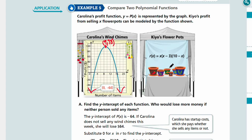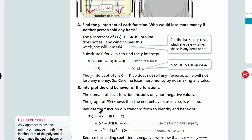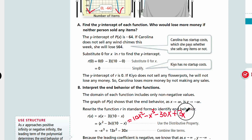Looking at Kia's flower pots, we need to look at the equation and convert it to standard form. So r of x — we multiply x out and distribute it with the binomial x minus 3, then multiply the binomials using the FOIL method and combine like terms to get negative x cubed plus 13x squared minus 30x. Negative x squared times negative x gives x cubed, negative 3x times 10 gives negative 30x, and negative 3 times negative x gives positive 3x squared. Add the like terms to get the trinomial.